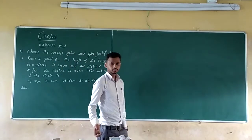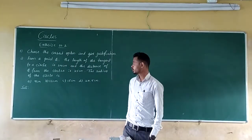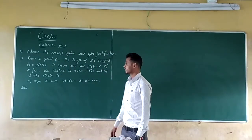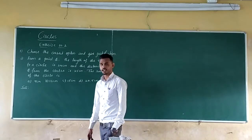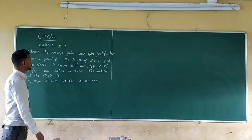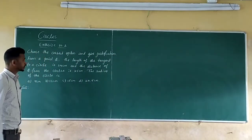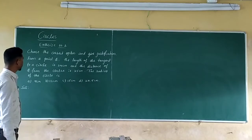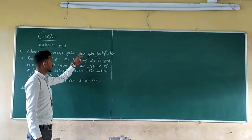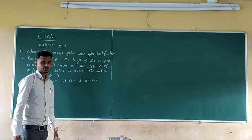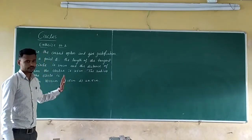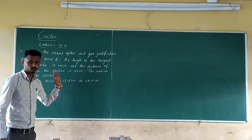Hello students, welcome to the mathematics class. Here we are going to do the chapter Circles. Now let us see Exercise 10.2. In that, the first main question: choose the correct option and give justification. Justification means how you got that answer — you need to solve.